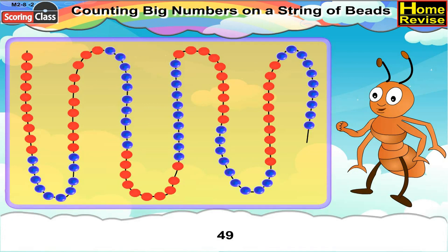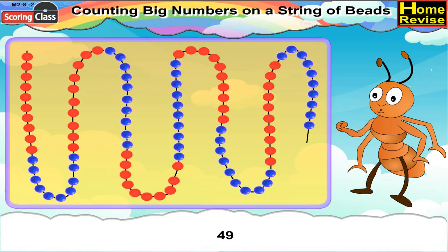Now we have number 49. For 49, first we will take 10 red beads, followed by 10 blue beads. Then again 10 red beads, followed by 10 blue beads. And now we will count 9 more red beads. We will place the clip after 9 more red beads. And this is our number 49.